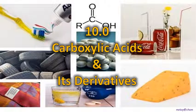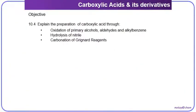Hi, welcome back to this channel. In this video, we're still in chapter 10, carboxylic acid and its derivatives. We are going to focus on preparation of carboxylic acid. So generally, these are the few methods we can use to prepare carboxylic acid. First, oxidation of primary alcohol, aldehyde, and alkylbenzene with benzylic hydrogen.